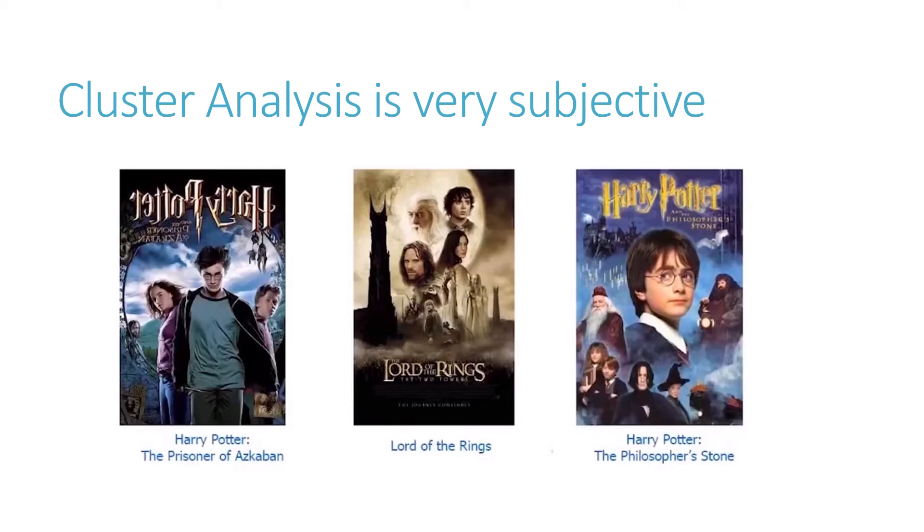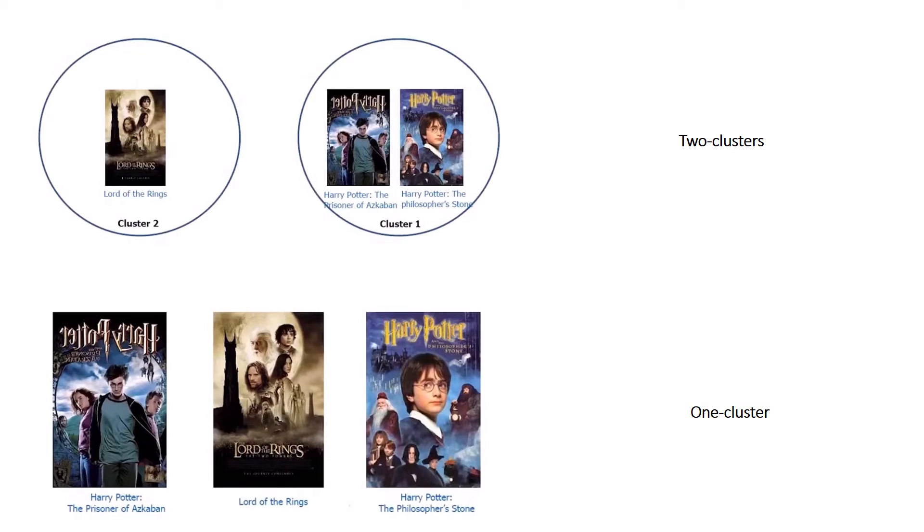Cluster analysis is very subjective in nature. To prove it, let's see the example below: into how many clusters can you divide the following movies? Probably two or one—two clusters if we consider on the basis of title, but if we include contents of the book, that is fictional nature, then only a single group. Cluster analysis is very subjective in nature.